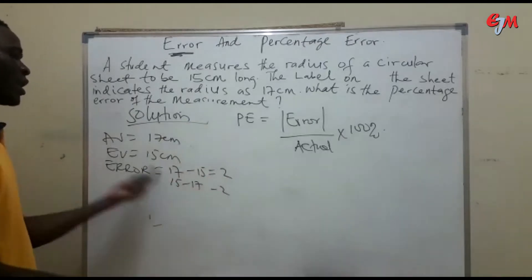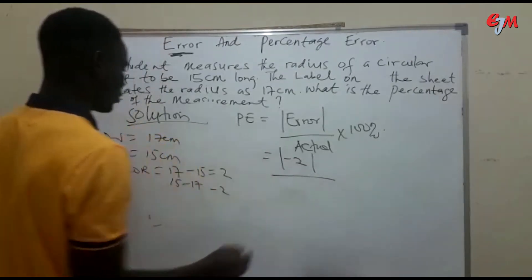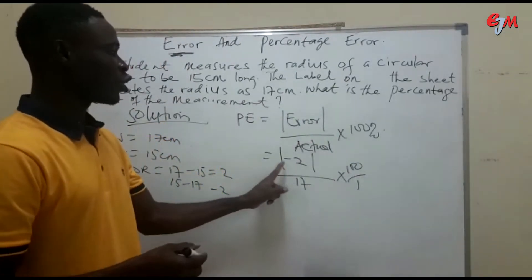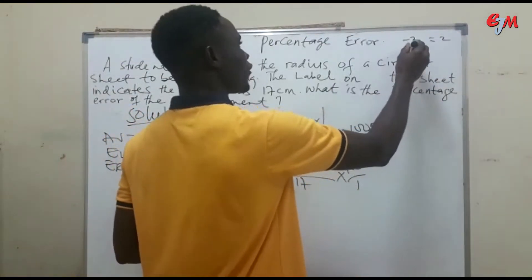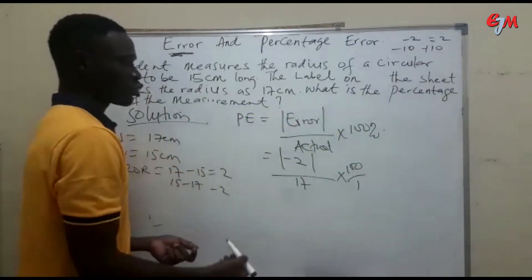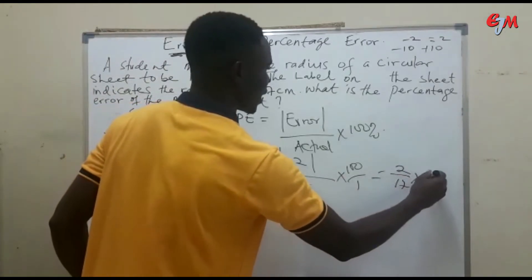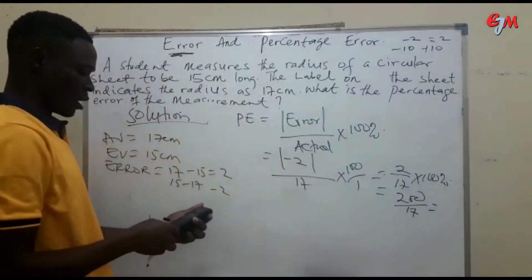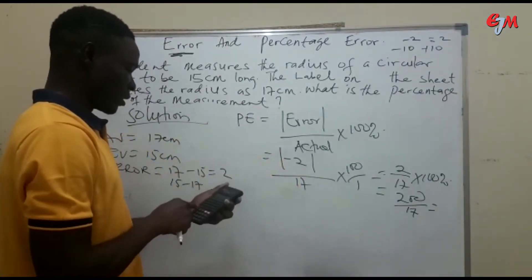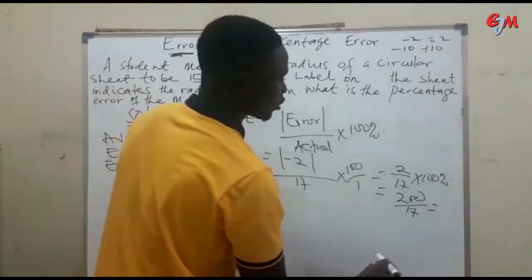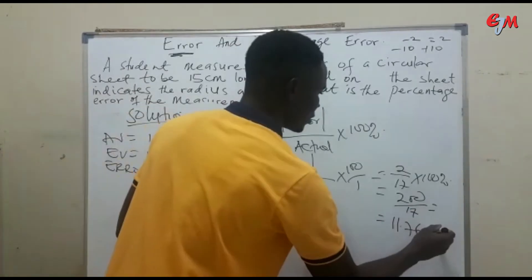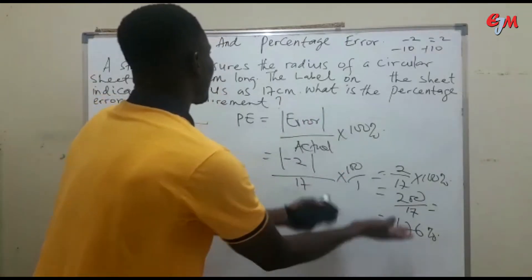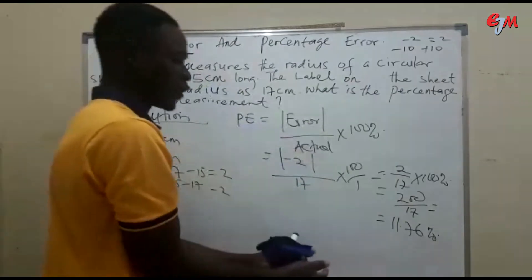So the error is minus 2 or plus 2. Using PE equals absolute value of minus 2 over 17, times 100%: the absolute value of minus 2 is 2, so we have 2 over 17 times 100%, which gives 200 divided by 17, which equals 11.76%. So the percentage error is 11.76%. There are also situations where they give you the percentage error and the measured value and ask you to find the actual value.